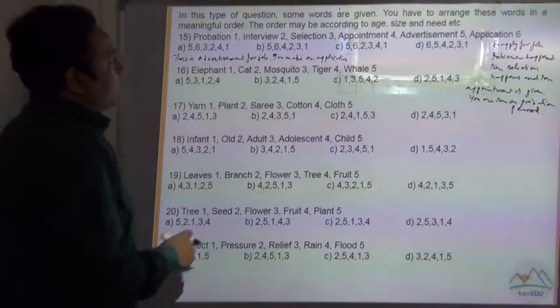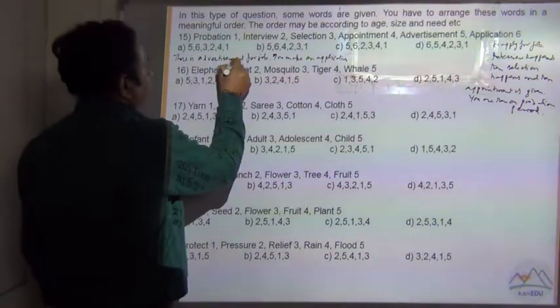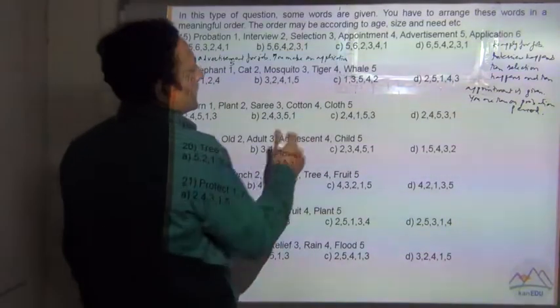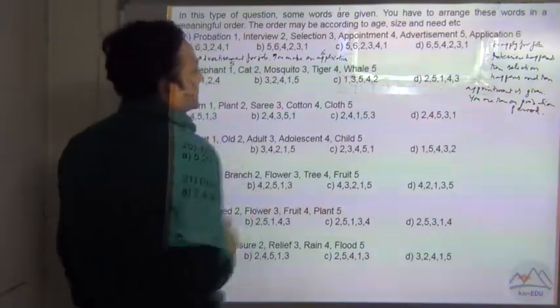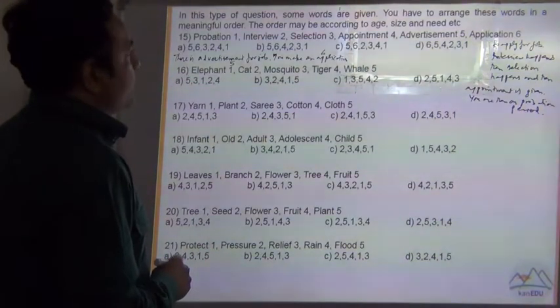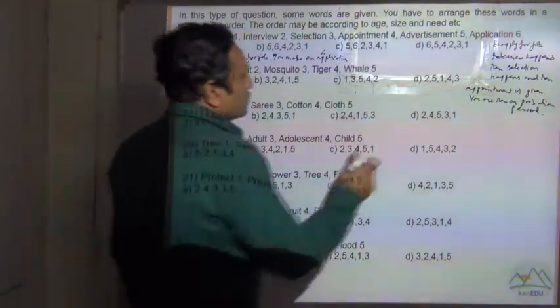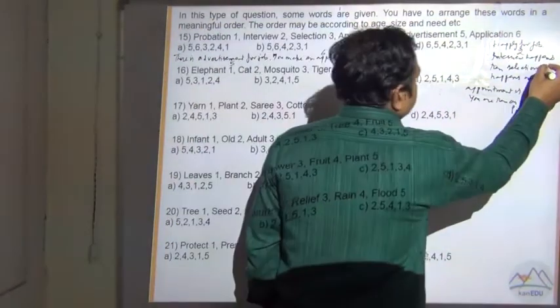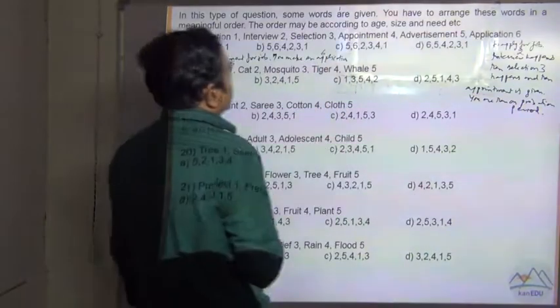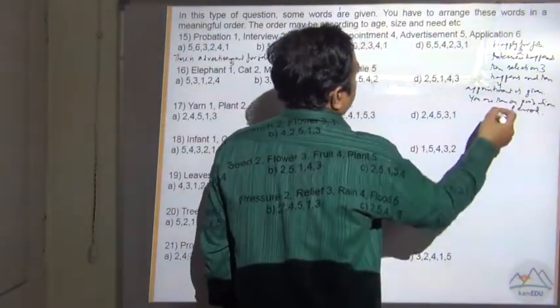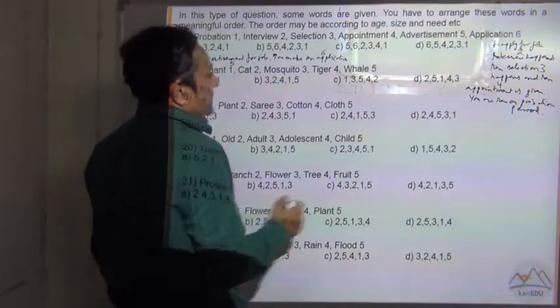So advertisement is your 5, application is your 6 and you apply for the job, interview happens so that is 2. Then selection happens, 3. Appointment is given to you, that is 4, and then you are on probation period, that is 1.